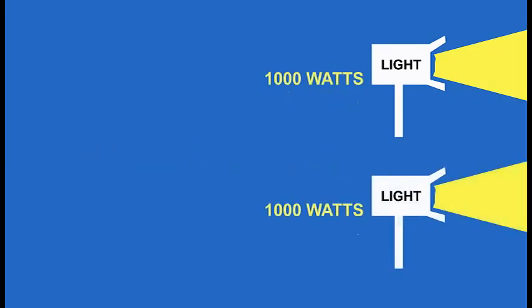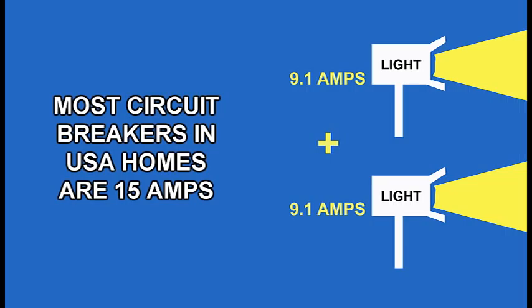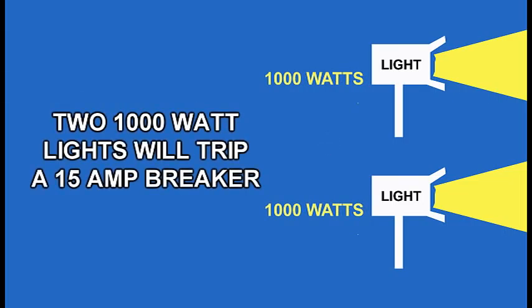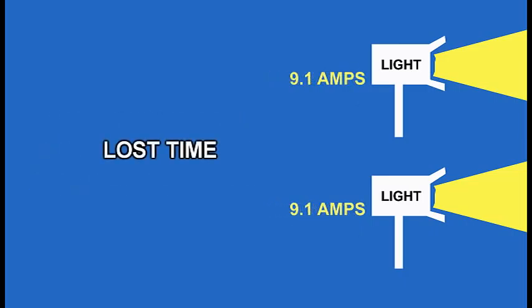If you're going to try to plug two of these lights into one wall plug, that's 9.1 plus 9.1, which equals 18.2 amps. Most household circuit breakers are 15 amps — some are higher, such as in kitchens or bathrooms — but most common ones are about 15 amps in a house. So if you plug two 1,000 watt lights, that's 18.2 amps into that 15 amp breaker, it's not going to hold. That breaker's going to kick, and then you're going to be looking for the breaker box, and you'll lose time.